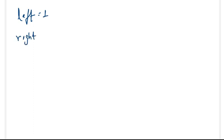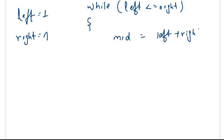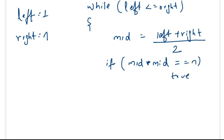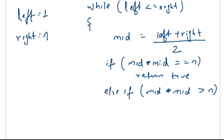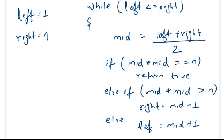We set left to 1 and right to n. The binary search runs while left is less than or equal to right. Each iteration we compute mid as the middle of left and right. If mid squared equals n, we return true. If mid squared is greater than n, the answer lies below mid, so right becomes mid minus 1. Otherwise, the answer lies above mid, so left becomes mid plus 1. If n is a perfect square we return true; otherwise the loop terminates and we return false.